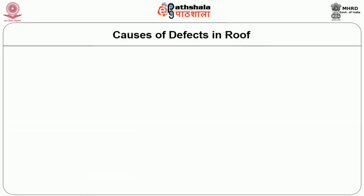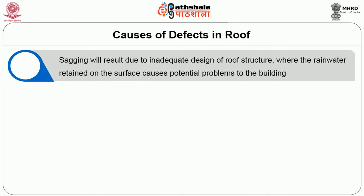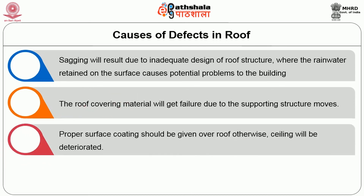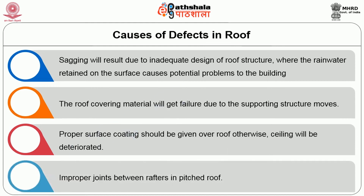The causes of defects in roofs and ceilings are: sagging results from inadequate design of the roof structure where rainwater retained on the surface causes a potential problem; roof covering material will fail due to movement of the supporting structure; proper surface coating should be given over the roof otherwise the ceiling will deteriorate; and improper joints between rafters in pitched roofs also cause defects.